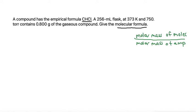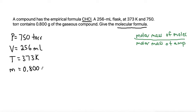In order to find the molar mass of the molecular formula, we need to use the information that's been given to us about the volume, the temperature, and the pressure of this gaseous compound. It also gives us the mass. So let's write down what we have so far. We know that the pressure is given as 750 torr, the volume is 256 milliliters, the temperature is 373 kelvin, and the mass of the gas is 0.800 grams.